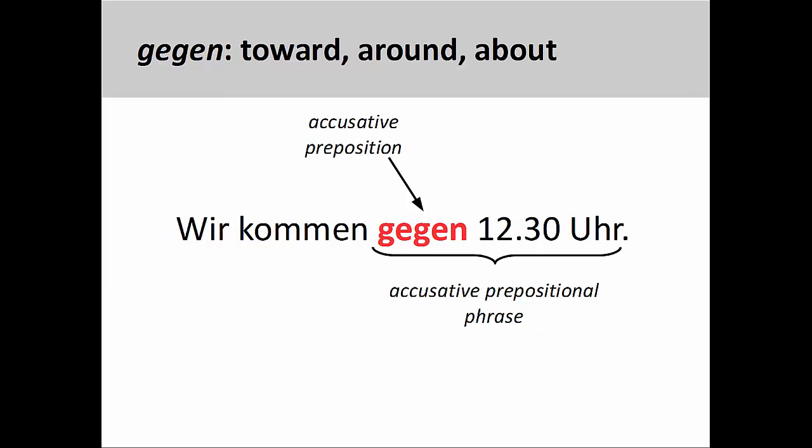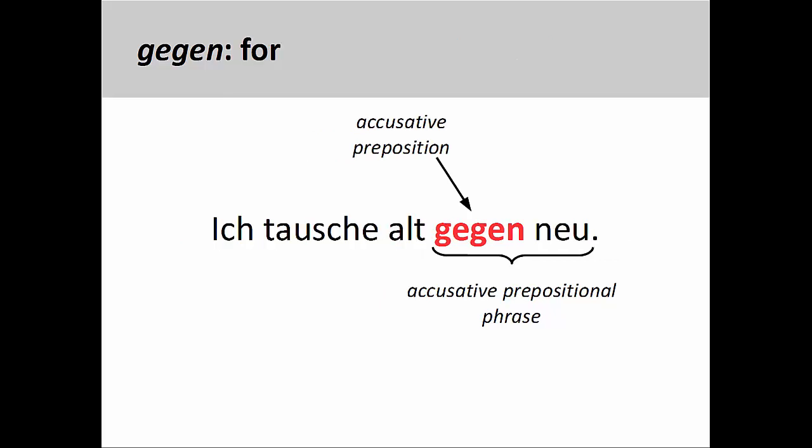The preposition gegen is also used to express toward, around, or about in time expressions, such as Wir kommen gegen zwölf Uhr dreißig — We're coming about 12:30 p.m. And gegen can also be used to express for, as in Ich tausche alt gegen neu — I am trading in the old for the new.